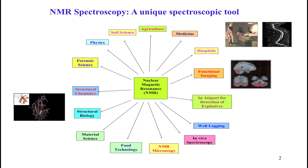NMR spectroscopy has a wide range of applications, as you can see, in different areas in biology and chemistry. One can apply it to agriculture, to medicines, to physics, and different areas of structural chemistry and biology. In this course, we are going to look at how NMR can be applied mainly to chemistry problems and also to biological problems such as biomolecules.